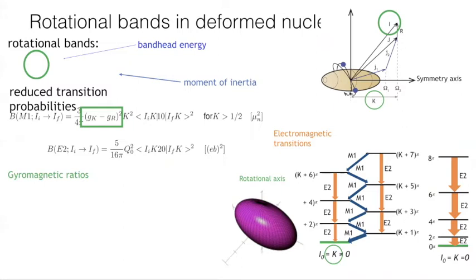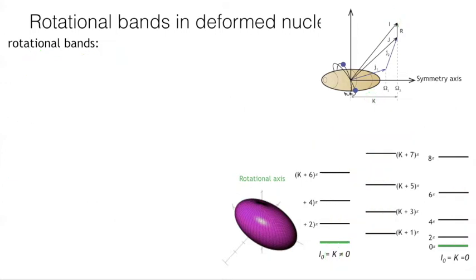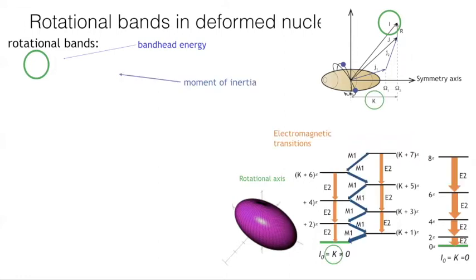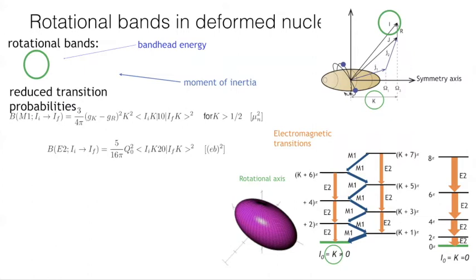Because of rotation, rotational bands are formed on the single particle states and they follow a characteristic pattern. We have the nuclear spin I and on the symmetry axis we have the projection called K. The electromagnetic transitions for two cases — K≠0 and K=0 — are governed by the internal structure of the nucleus, the B(M1) and B(E2) transition probabilities. In the case of M1 transitions, the g_K and g_R factors are relevant.